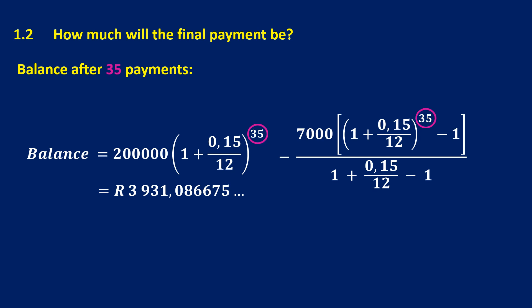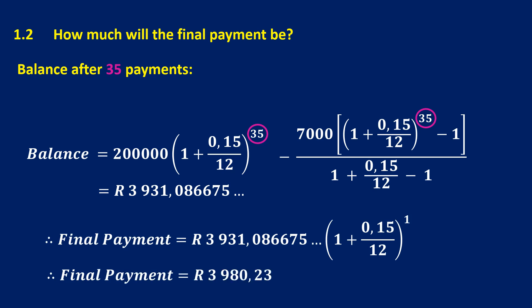But we need to make the final payment at the end of the 36th month. You're not going to make a half payment in the middle of the month. You're going to wait till the end of that next month to make your final payment. So that loan still has to gain interest for one month. So the 3931 still has to gain interest for one month. So just multiply it by an interest bracket to get your final payment of 3980.23. And at this stage, I can round off to my two decimal places because we're talking about financial maths. We're talking about rands and cents.